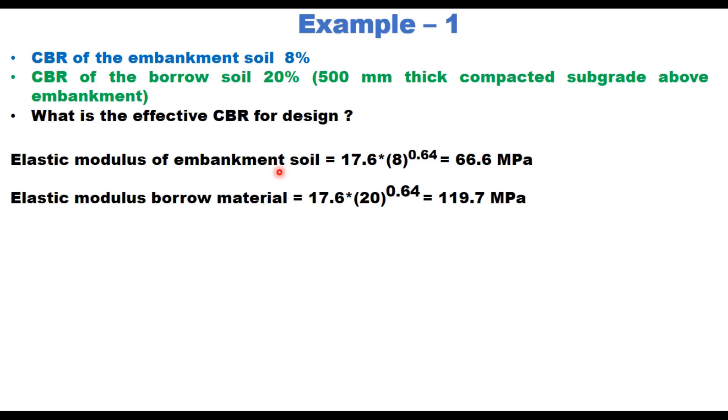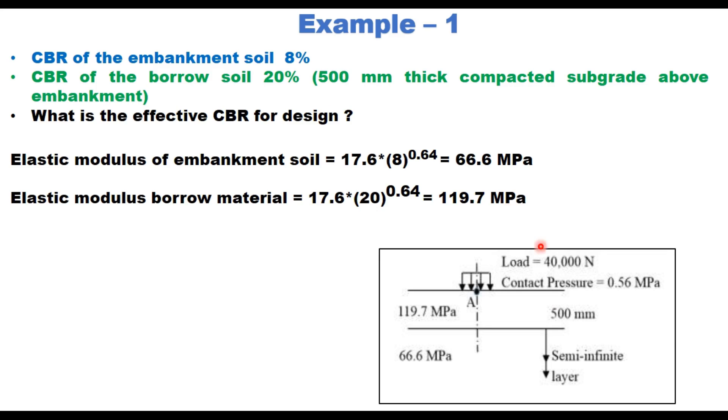First, you calculate elastic modulus of embankment soil using this equation because CBR is more than 5, so we take this exponential equation: 17.6 × 8^0.64 = 66.6 MPa. And elastic modulus of borrow material which is used to prepare subgrade is 119.7 MPa. Now you have a two layer system: layer 1 has MR value of 119.7 MPa, thickness is 500 millimeter, and layer 2 which is embankment and semi-infinite in thickness has MR value of 66.6 MPa. Load single load of 40,000 newton, contact pressure 0.56, Poisson's ratio 0.35, and using these parameters you calculate surface deflection at the center of the load using IIT PAVE software.